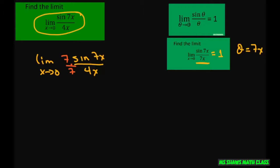To rewrite this, I'm going to, 7 times 4 is 28. So what I'm going to do is pull these two out.